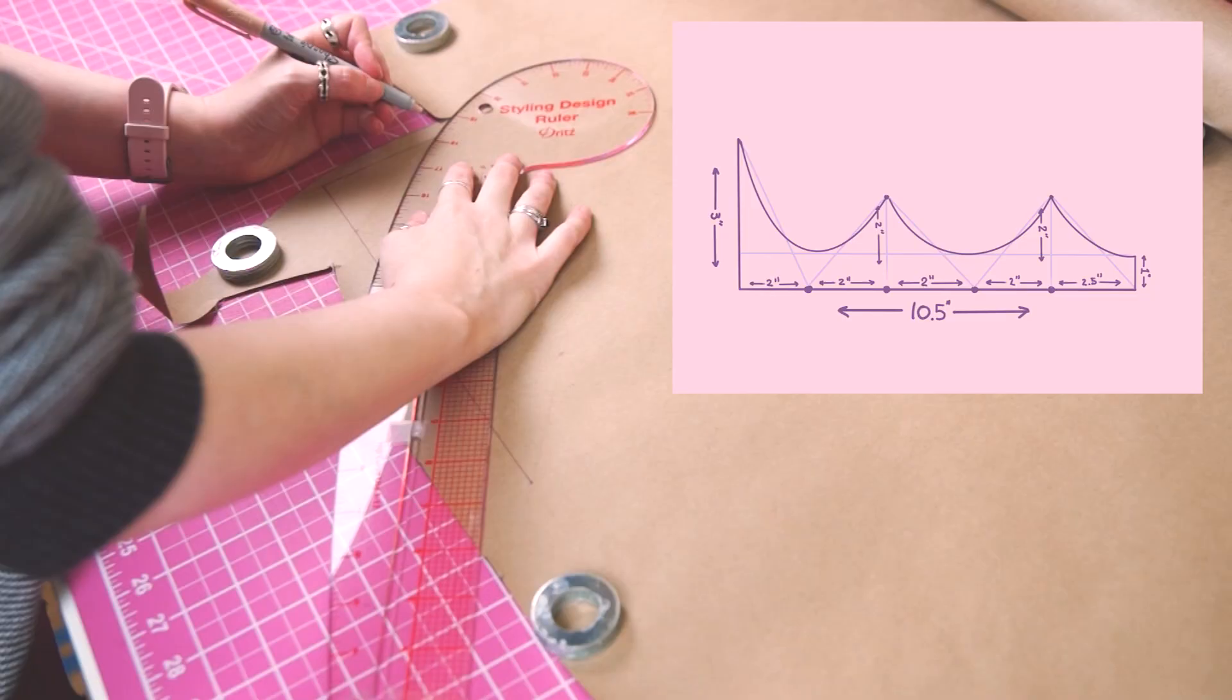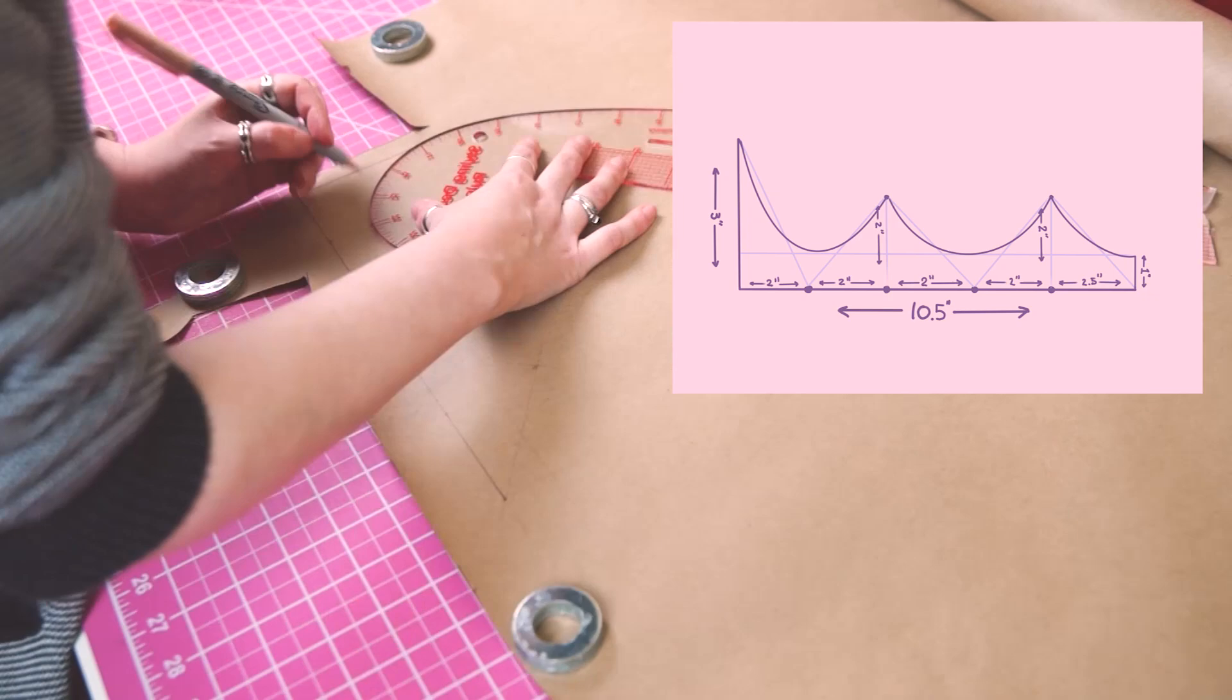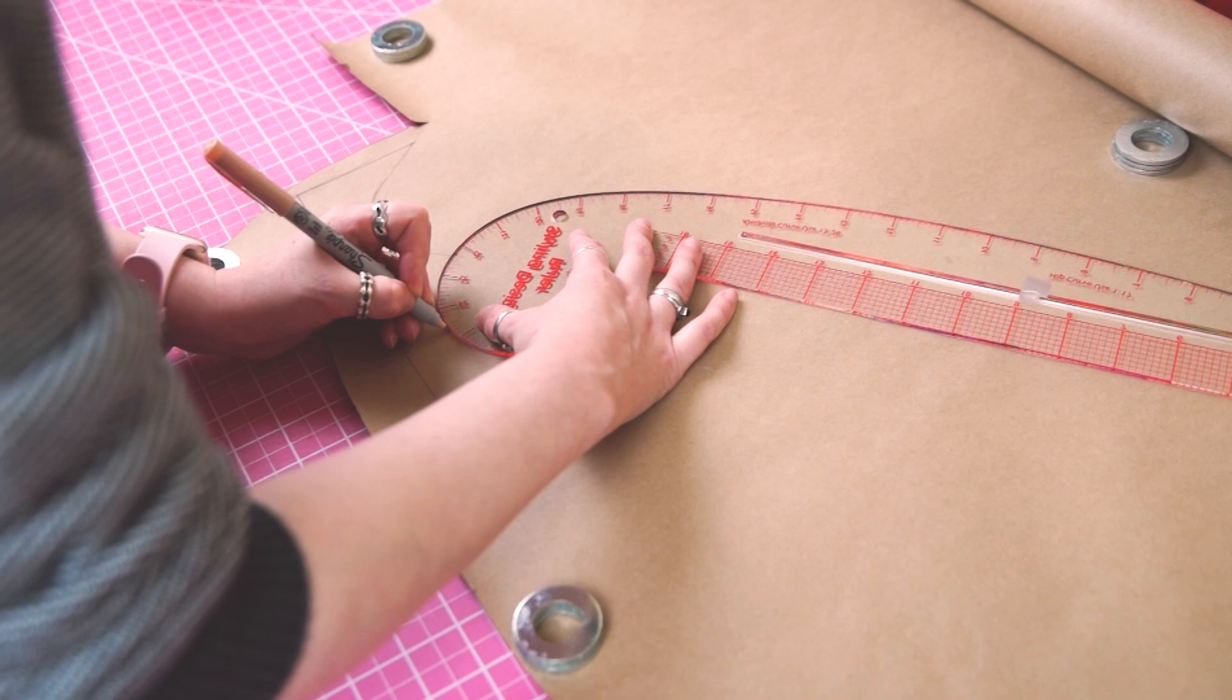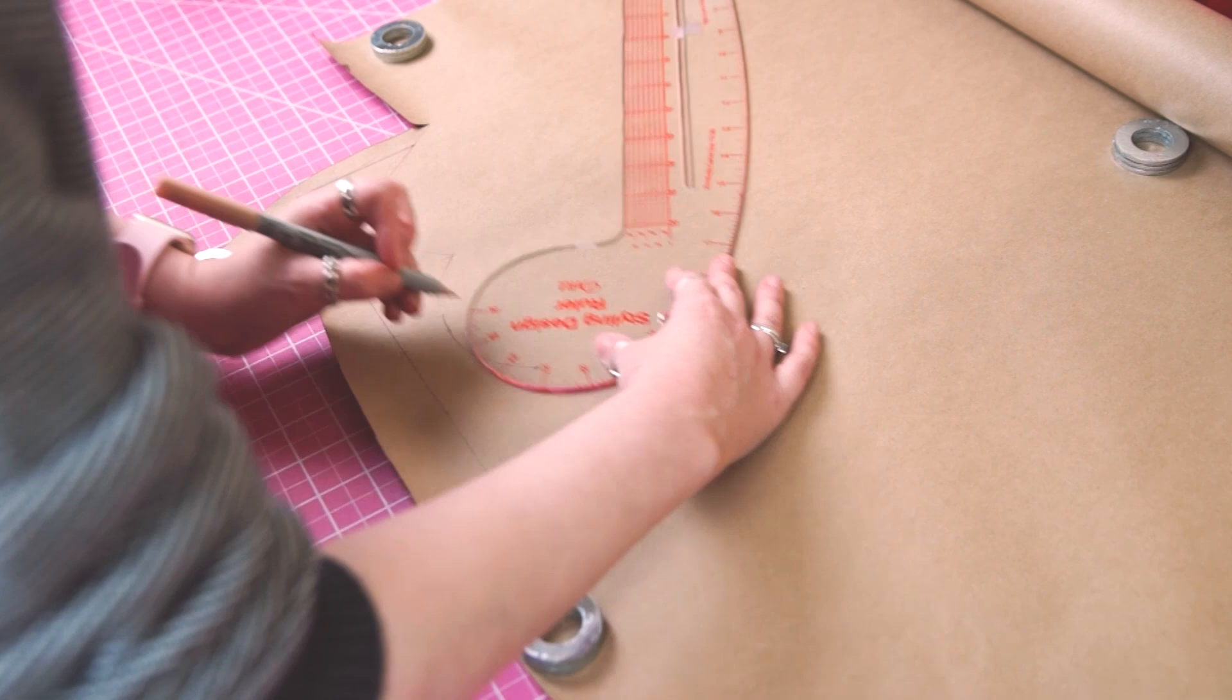Now that we've drawn up the general shape of the crown we can draw in the curves. I'm using a design ruler. You can use a French curve, a flexi curve, or any roundish object that you happen to have on hand. If you don't have any of those drafting tools you could also just eyeball it.